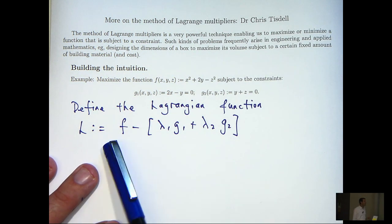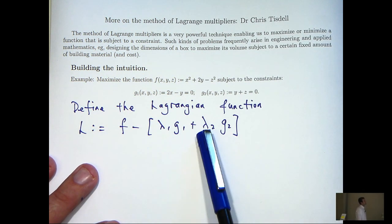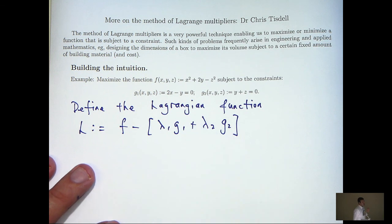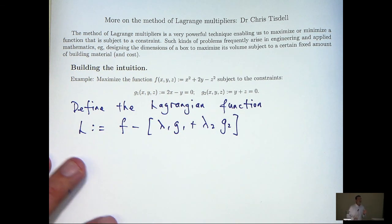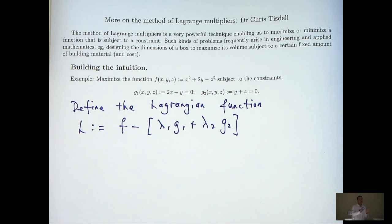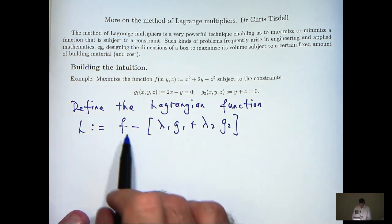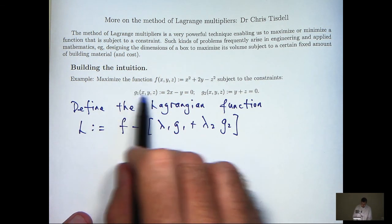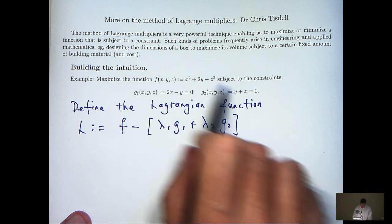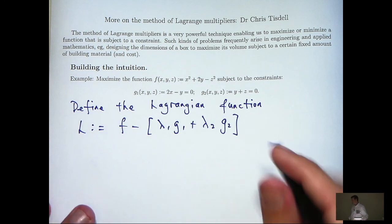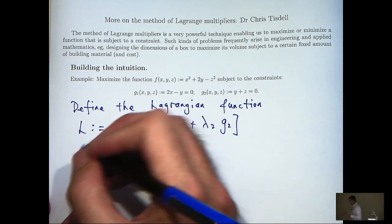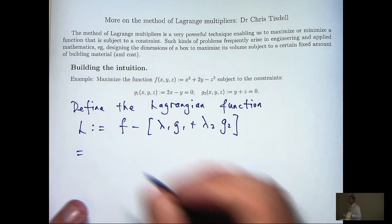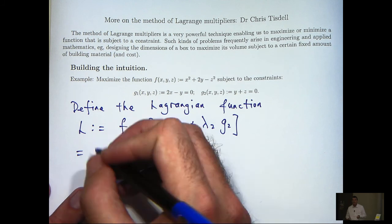It's defined in the following way. The λ1 and λ2 are the so-called Lagrange multipliers for this problem — they're just numbers. So if f and g1 and g2 are defined in the above way, let's actually write them out in full.